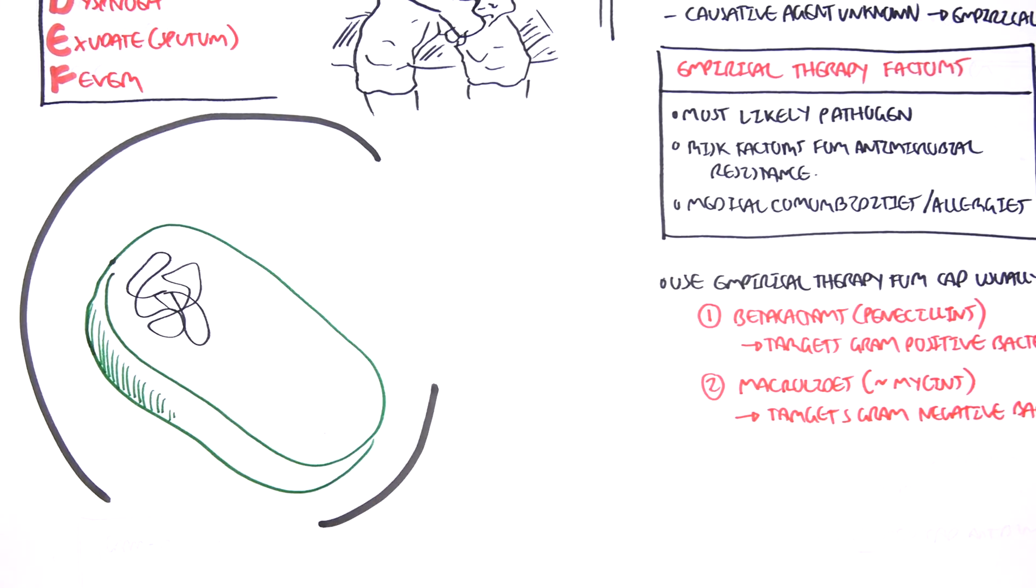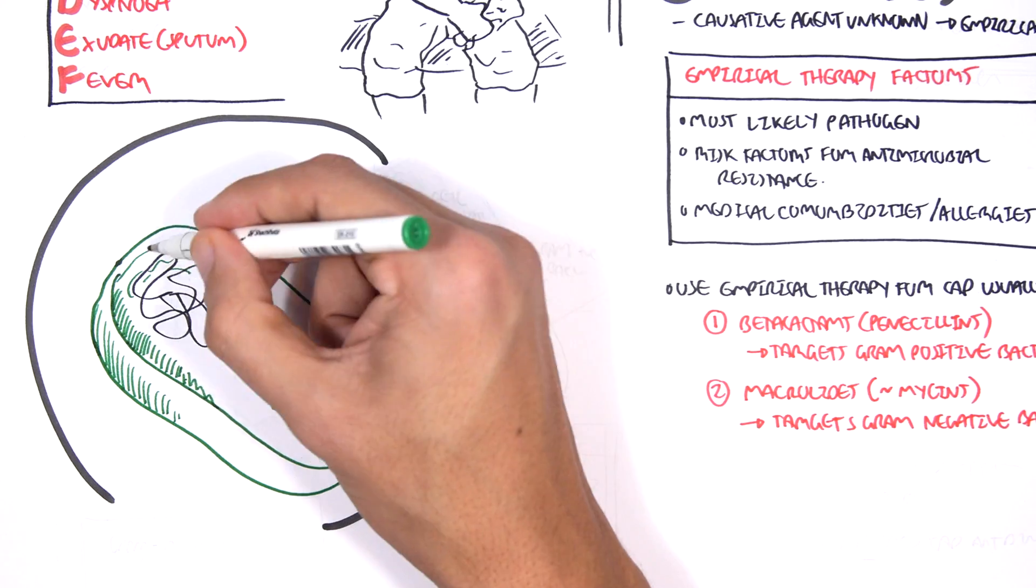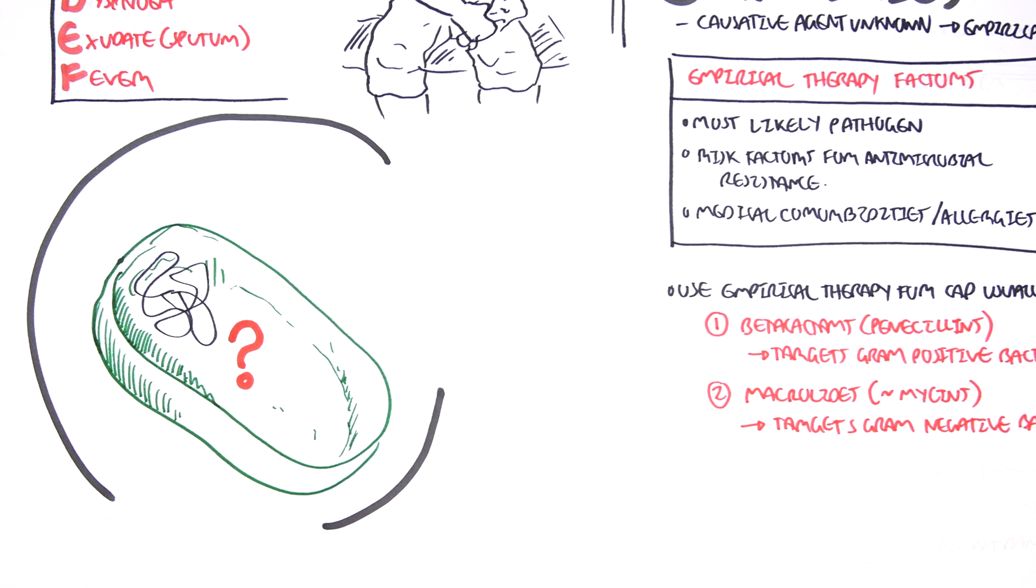So how do these antibiotics work? Well, here we're looking at a bacteria with its DNA, it's green. But we don't know what bacteria it is, so we use empirical therapy. So firstly, let's look at beta-lactams.